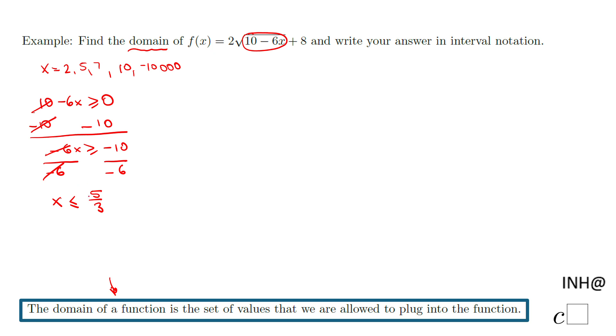Okay, and this is the domain of this function - any number that is less or equal to 5 thirds. However, we need that interval notation, and that will be translated in this format: negative infinity to 5 over 3.